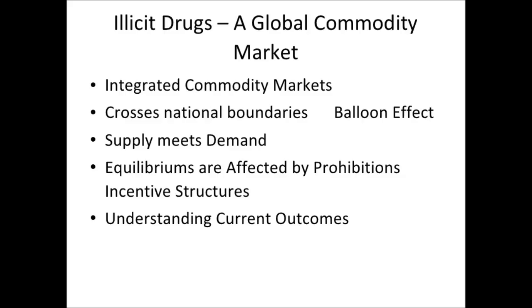Supply will always meet demand in the international goods market — it's almost a law. You can't stop that. The equilibriums are affected by prohibition's incentive structures, and you'll always come across this theme: you can't eradicate it, but you can shift it. You can't eradicate the supply, but you can shift it. You can't eradicate the demand, but you can shift it into other drugs — all these little micro changes.